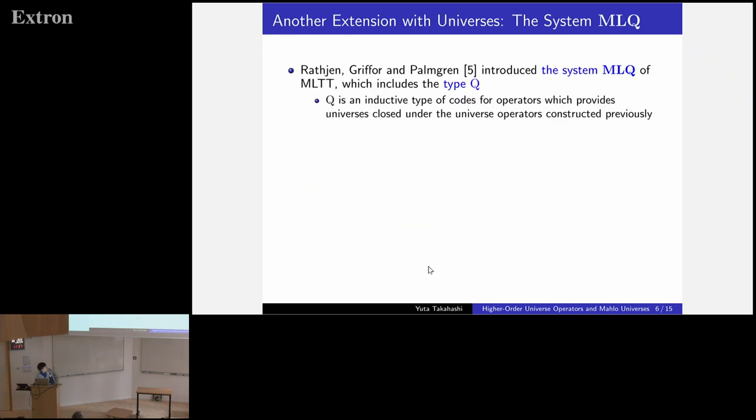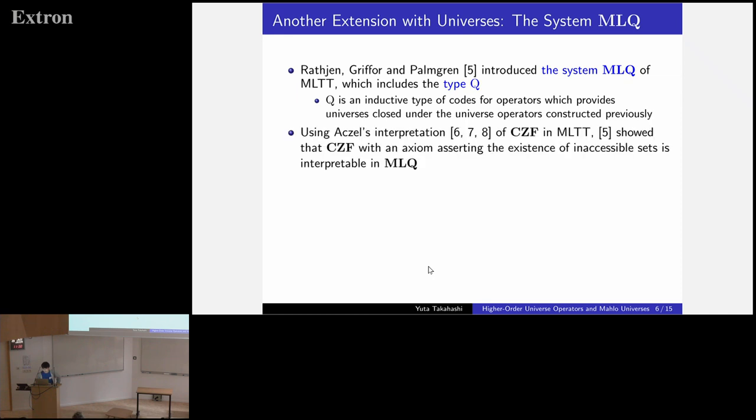Next, let me explain another extension of MLTT, which I want to compare with Mahlo universes. Rathjen, Griffor, and Palmgren introduced the system MLQ of MLTT, which includes a type Q. Q is an inductive type of codes for operators, which provides universes closed under the universe operators constructed previously. Using Aczel's interpretation of CZF in MLTT, they showed that CZF with an axiom asserting the existence of inaccessible sets is interpretable in MLTQ.